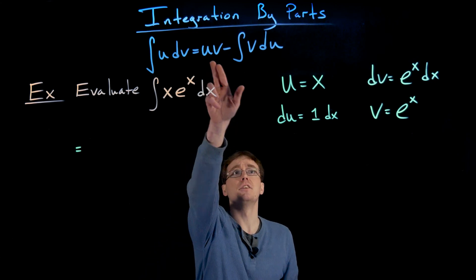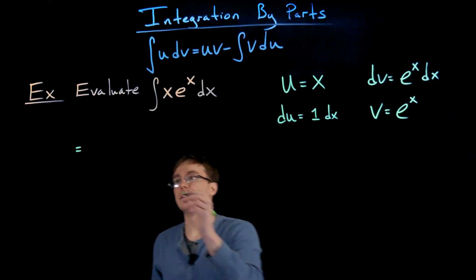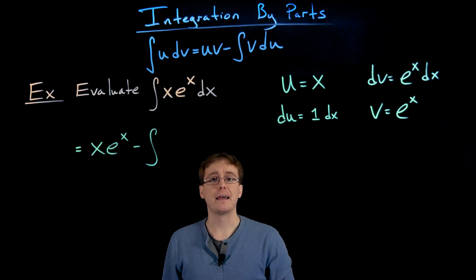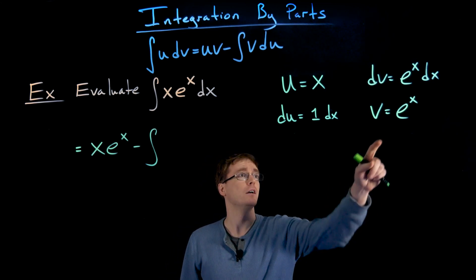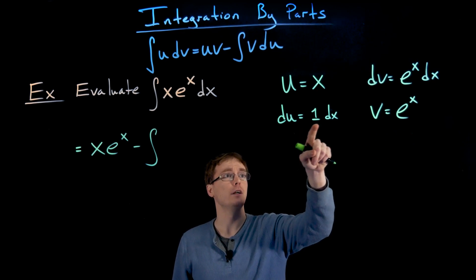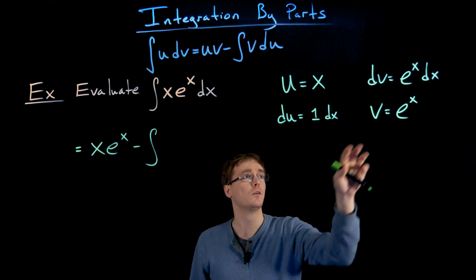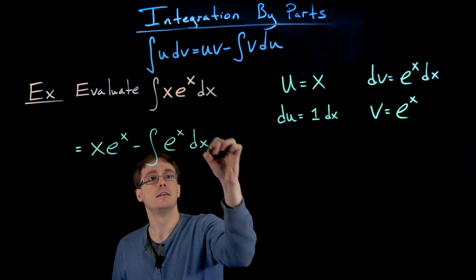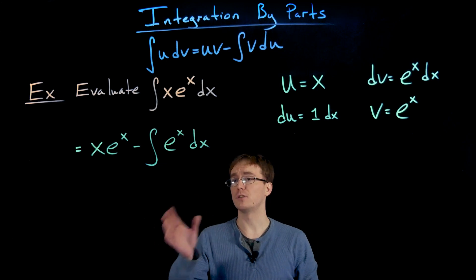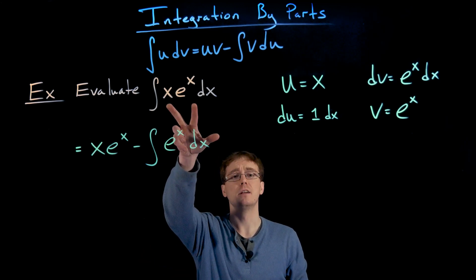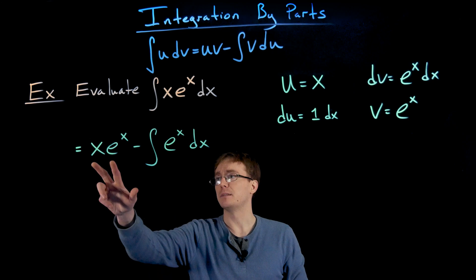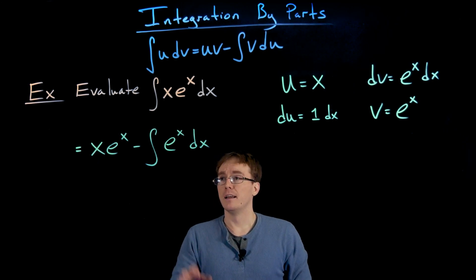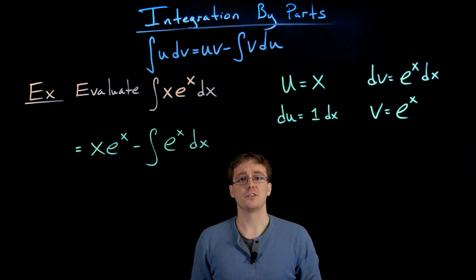Starting with u times v, that's just x times e to the x. Then we subtract away v times the differential of u. v is e to the x and du is 1 times dx, so v times du equals e to the x dx. Using our integration by parts formula, our original indefinite integral equals x times e to the x minus this other indefinite integral, which is much easier to evaluate.